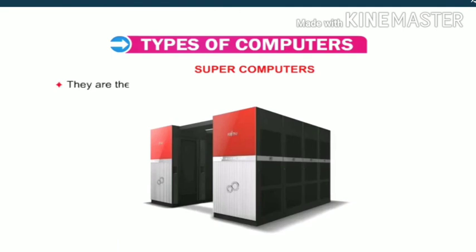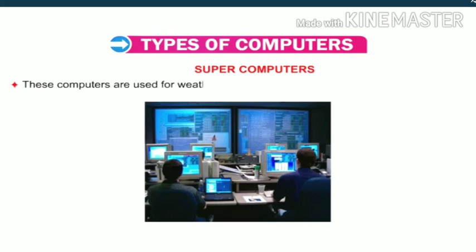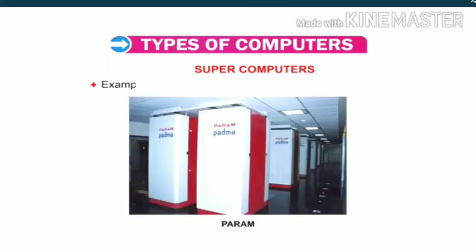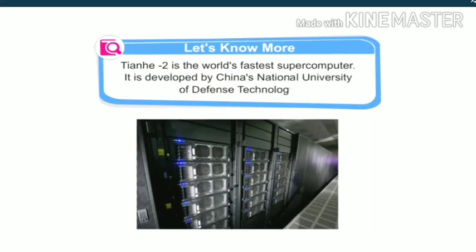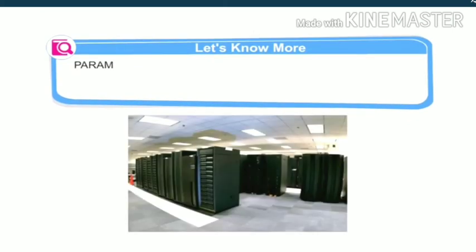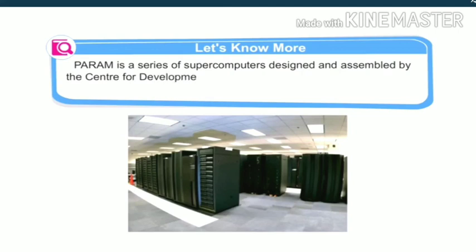Supercomputers are the most powerful computers with a huge processing speed. They are used for weather forecasting, space research, satellite control, etc. Examples include Cray-1, Cray-2, Param and ETA-10. Note that Tianhe-2 is the world's fastest supercomputer, developed by China's National University of Defense Technology. Param is a series of supercomputers designed and assembled by the Centre for Development of Advanced Computing (CDAC) in Pune, India, with the latest machine being the Param Yuva II.